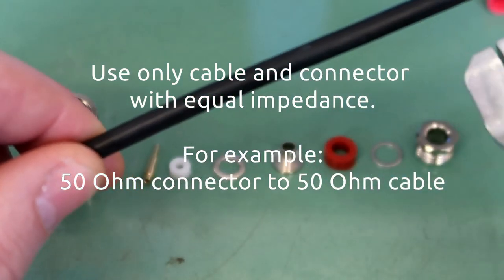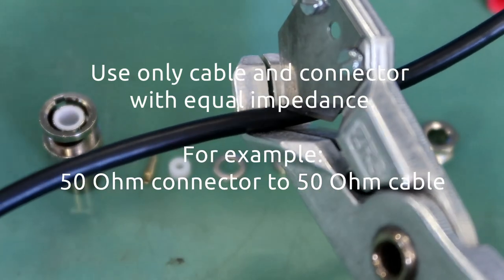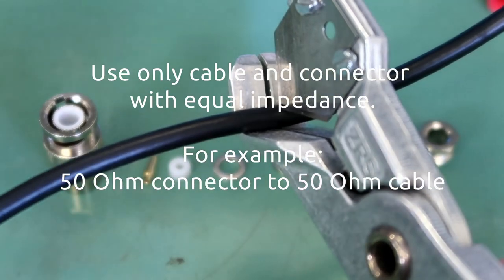Cut the cable and make sure it's equal impedance as the connector. For example, a 50 ohm connector should be mounted to a 50 ohm cable.